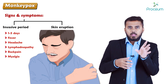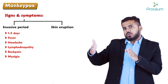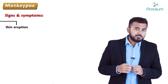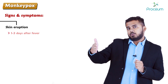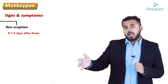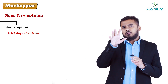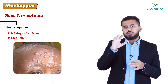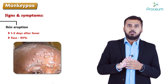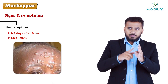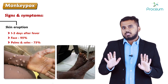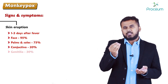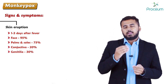After the invasive period, the skin eruption period begins one to three days after fever onset. Skin eruptions mainly appear on the face in 95% of cases. They also appear on the palms and soles in about 75% of cases, on the conjunctiva in about 20%, on the genitalia in about 30%, and on the oral mucous membranes in about 70%.